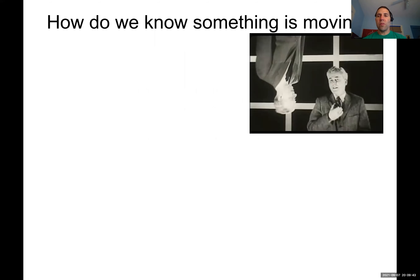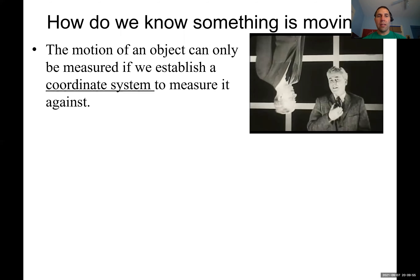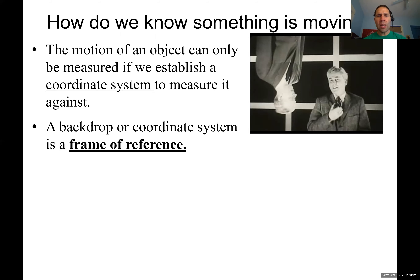So how do we know something is moving? You may have seen the frames of reference video — two gentlemen walking through certain scenarios. Hopefully you get the idea that the motion of an object can only be measured if we establish a coordinate system, or some sort of frame of reference to compare it to. Frame of reference is really just a fancy way of saying you need a coordinate system to detect and measure motion.